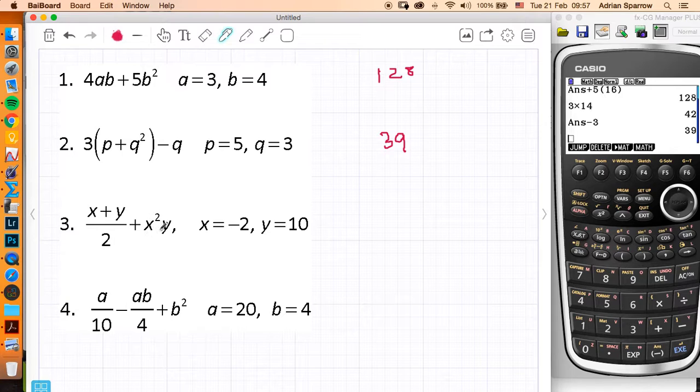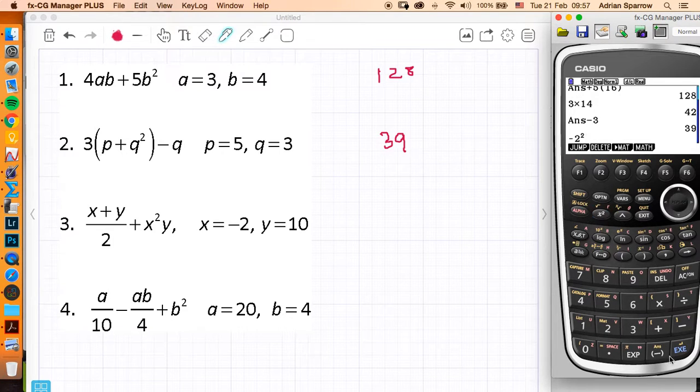Right, in here I want to do this bit first, so x squared y, so I want to do x squared times y, which is minus 2 squared. Now be careful with your calculator, minus 2 squared like that on your calculator gives you the wrong answer. You need to put a bracket through the minus 2, square it and you get 4.